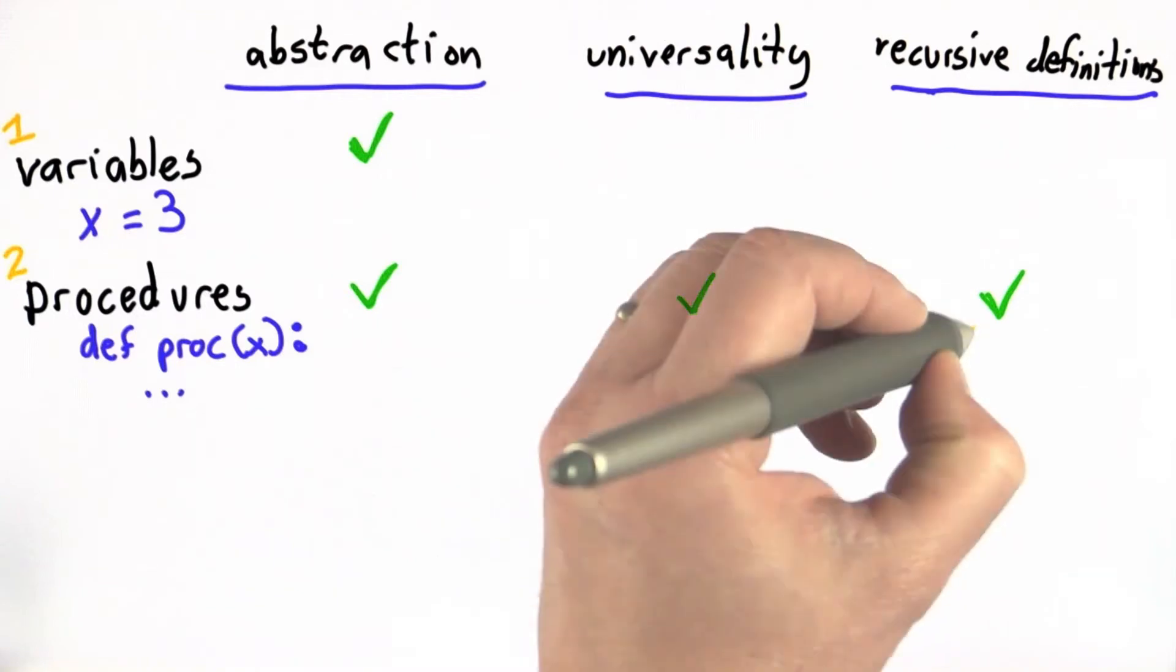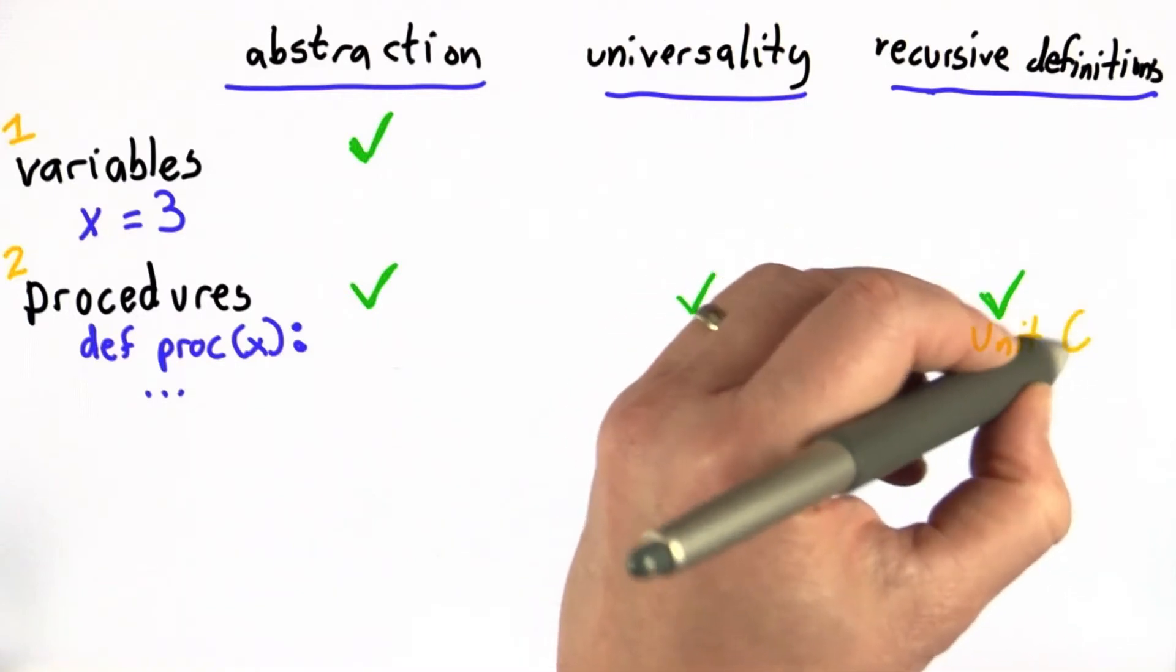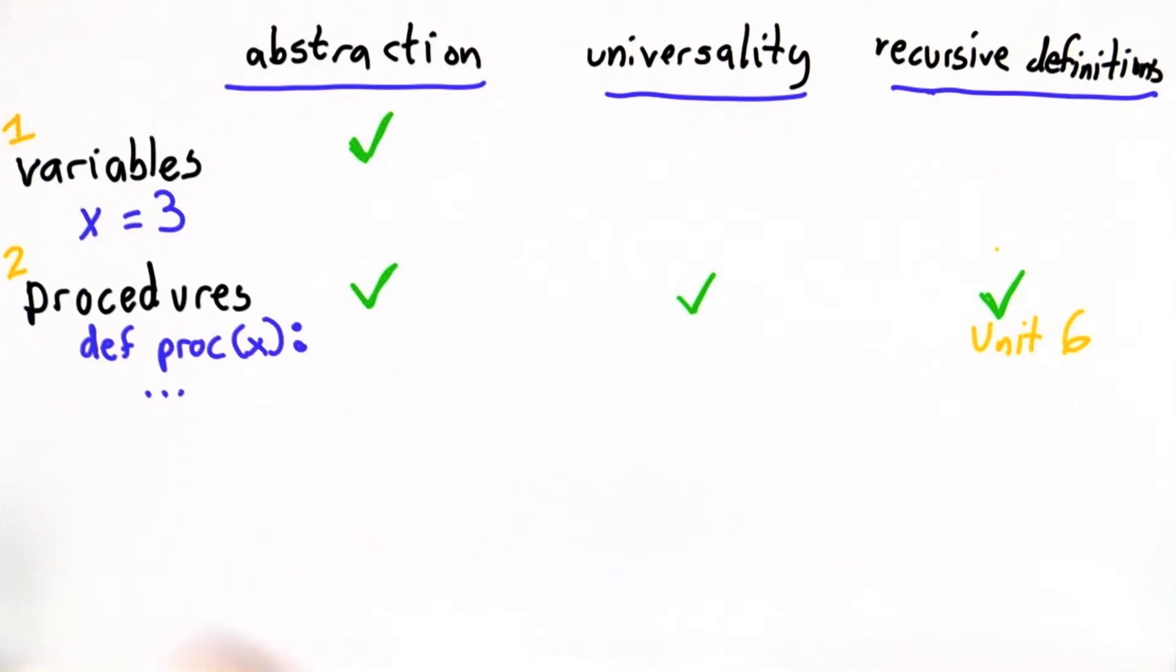And we've certainly defined recursive procedures, not until Unit 6, though. And this gives us a way to define a procedure to break a problem down by seeing it in terms of a smaller version of itself.